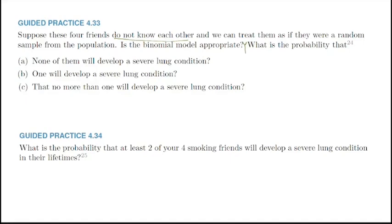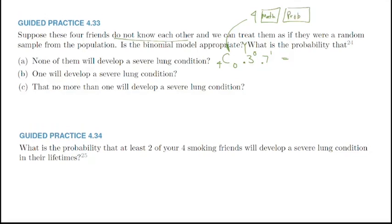What is the probability that none of them will develop a severe lung condition? There are four friends and we want zero to have it. In the calculator, type: 4 nCr 0 × 0.3^0 × 0.7^4. To get the nCr: type 4, then Math → Probability → nCr, then type 0, use the right arrow key to exit, then multiply by 0.3^0 and 0.7^4.